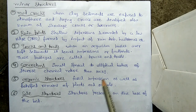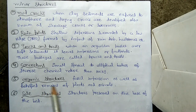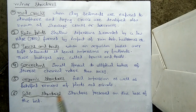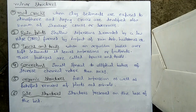The fifth minor structure is organic structures: fossil impressions as well as petrified remains of plants and animals. Petrified remains are the remains of organisms that have become trapped between rocks. The sixth and last is sole structures: structures preserved on the base of a bed. I hope you liked the video — keep supporting, keep watching, and thank you.